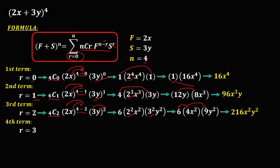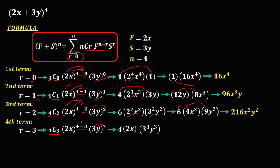For the fourth term, r equals 3. We have 4 choose 3, times 2x to the power of 4 minus 3, times 3y to the power of 3. Simplifying: 4 choose 3 is 4, and 4 minus 3 is 1, so we have 2x to the power of 1, or just 2x. Distributing the 3 gives 3 to the power of 3 and y to the power of 3. Then 4 times 2x is 8x, and 3³ is 27y³. Multiplying 8 and 27 gives 216, so the fourth term is 216xy³.